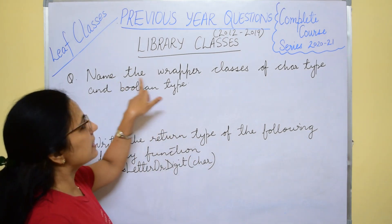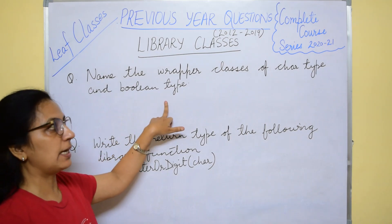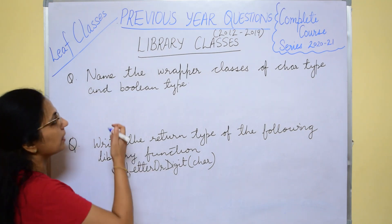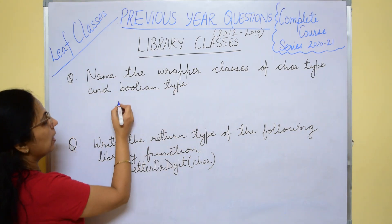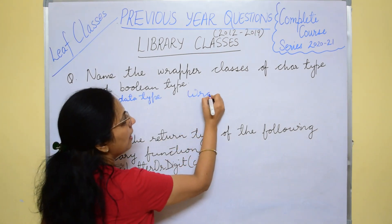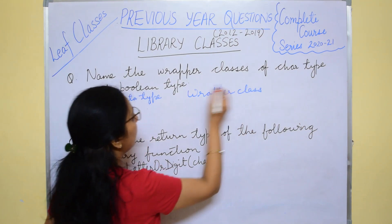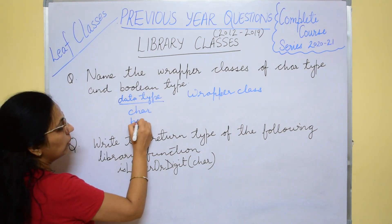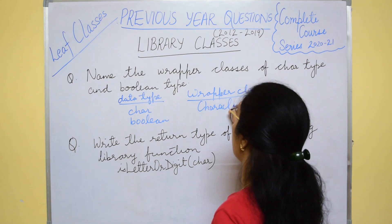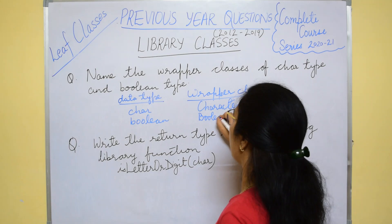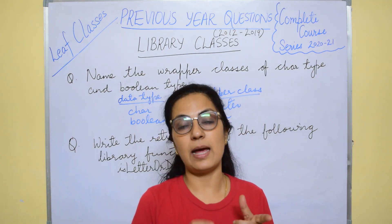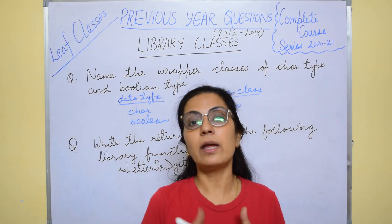Now the question of year 2015: name the wrapper classes of char type and boolean type. Presentation matters, so write it clearly. The wrapper class for char is Character with capital C, and the wrapper class for boolean is Boolean with capital B. From year 2012 to 2019, each year has around 2 to 4 marks questions from this topic — so it is very scoring and easy; prepare well.